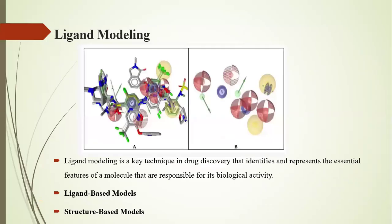We also have ligand modeling, also called pharmacophore modeling — both ligand-based and structure-based. In ligand-based pharmacophore modeling, we use the essential characteristics of specific ligands to design a virtual compound and then screen it. If we do not have a ligand, we use the structure of the protein and check the essential characteristics of the specific amino acids present in the pocket or binding region of the protein, and then design compounds based on that.